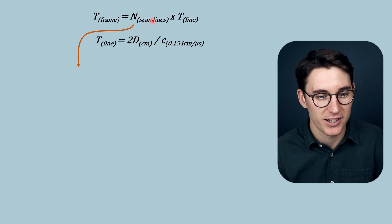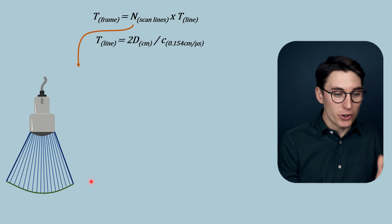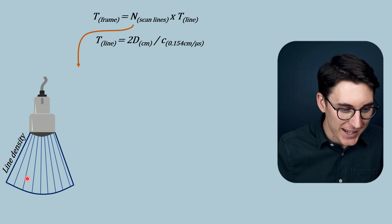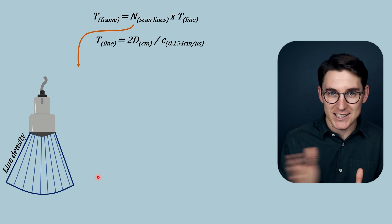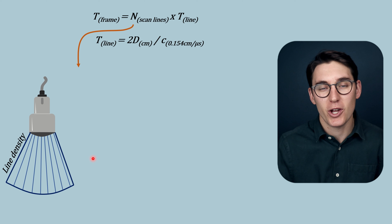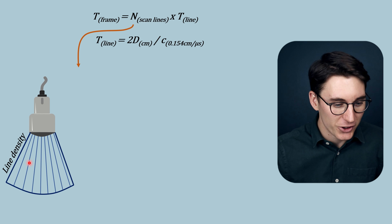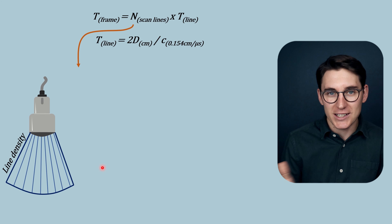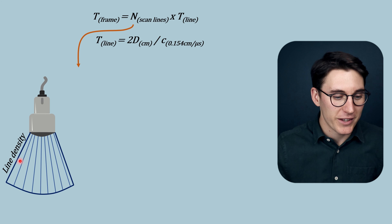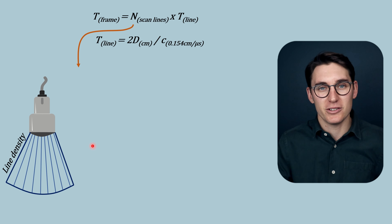We can alter the number of scan lines in two ways. The first is by reducing line density — reducing the number of A-lines taken within our field of view. The A-lines per centimeter decrease, line density decreases, and the time it takes to acquire a single frame decreases, giving us better temporal resolution and a higher frame rate. However, decreasing line density means we lose lateral resolution, as A-lines are further apart and some anatomy may be missed. Another term for line density is lines per degree — the number of lines within each degree of the transducer's field of view.